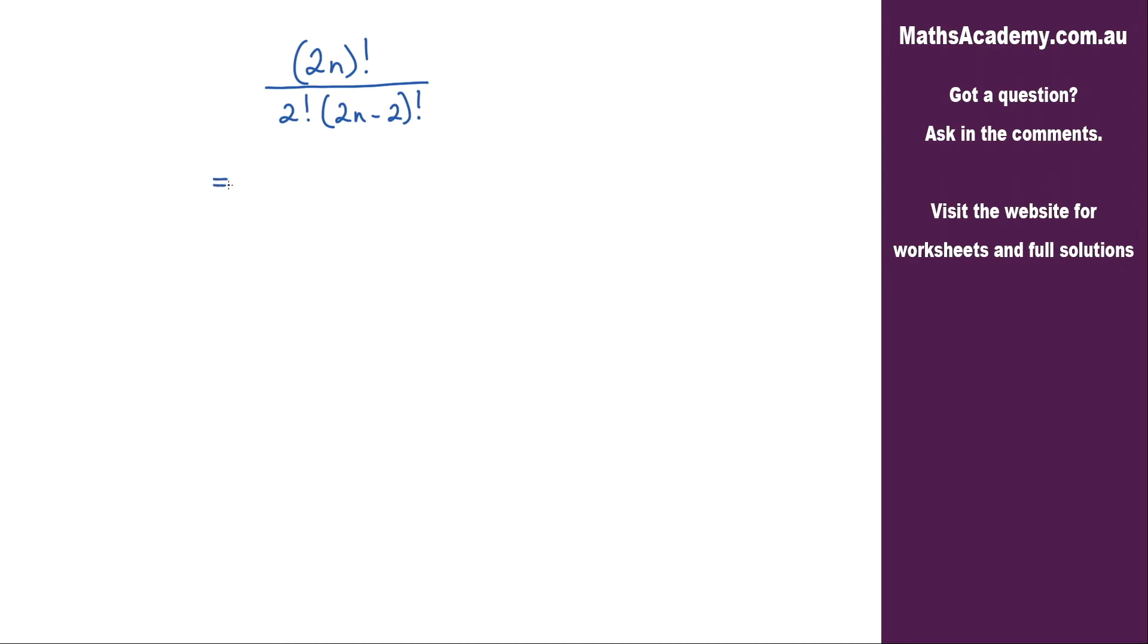Looking at this 2n factorial term here in the numerator and this 2n minus 2 factorial term in the denominator, I'm going to be able to cancel those by doing the following.